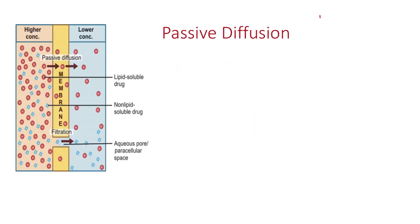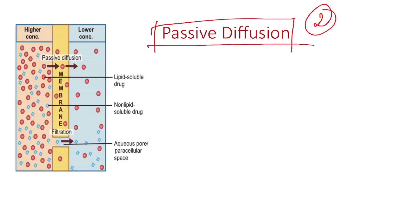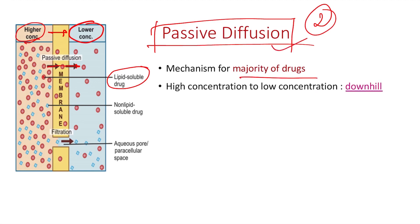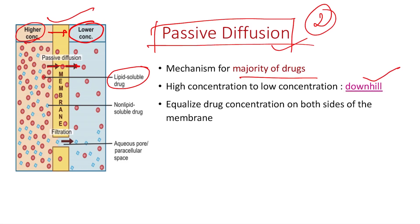Now let's talk about passive diffusion. Looking at the same figure, lipid-soluble drugs shown as red dots can pass through the membrane. They move from higher concentration to lower concentration, so the majority of drugs follow this passive diffusion. This movement is also called downhill movement. Eventually it equalizes the drug concentration on both sides of the membrane — the red dots move into the blue area and concentrations equalize.